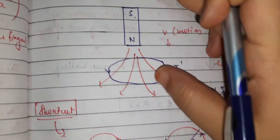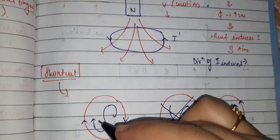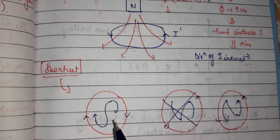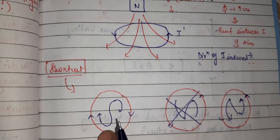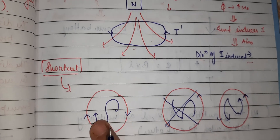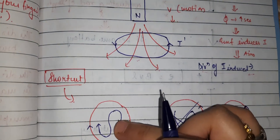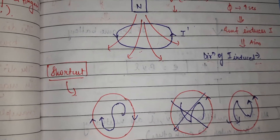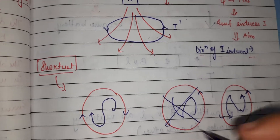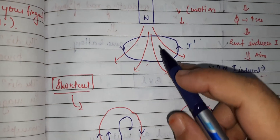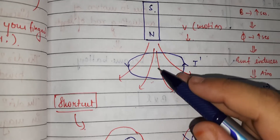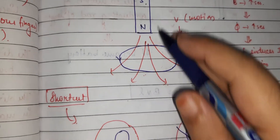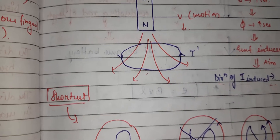If we bring the north pole of the magnet near to the loop, they would attract each other — but the induced current does not want this attraction. So the loop will form a north pole on its facing side, so that the magnet's north pole and the loop's north pole repel each other. The induced current always tries to impose a phase on the loop that opposes the magnet's motion. If the north pole is coming toward the loop, the loop forms a north pole to repel it. Similarly, if the south pole comes toward the loop, the loop forms a south pole to repel it.